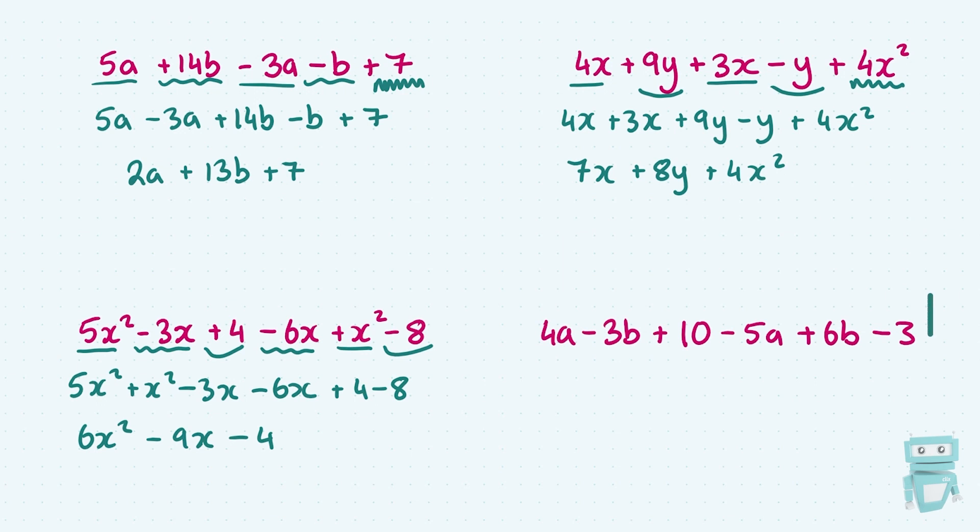Let's go once more here. I have 4a minus 3b plus 10 minus 5a plus 6b minus 3. So I'm going to put the a's all together at the start. I'm getting 4a minus 5a. I'm putting the b's together. I've got minus 3b plus 6b. And then I'm putting the constants at the end, the plus 10 minus 3.